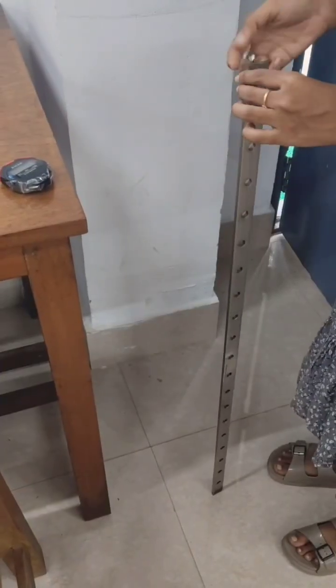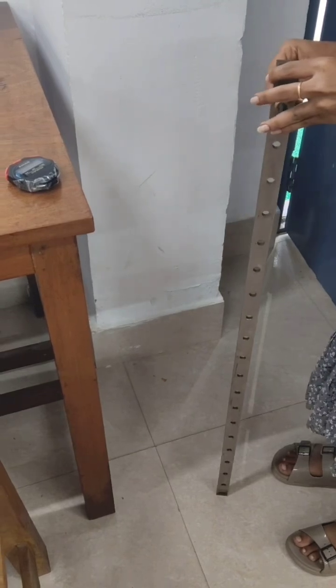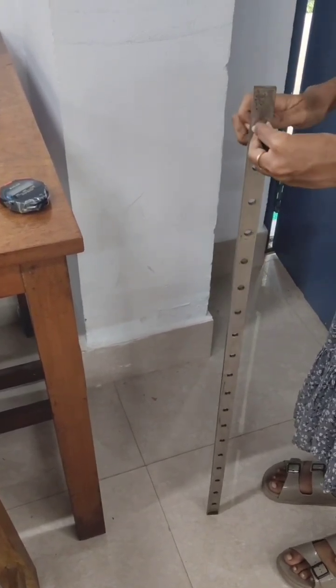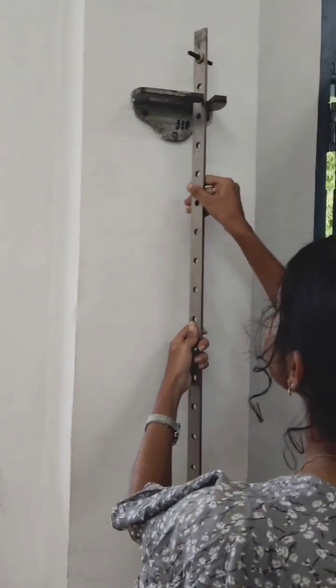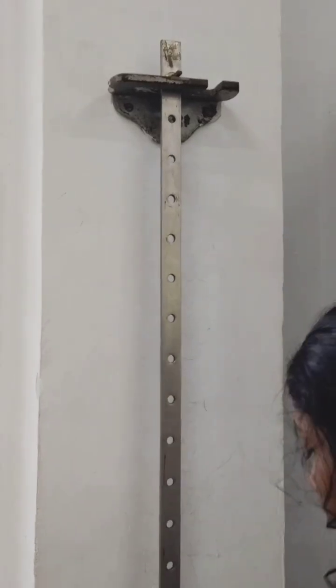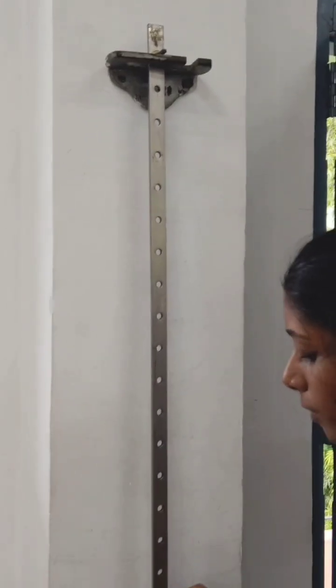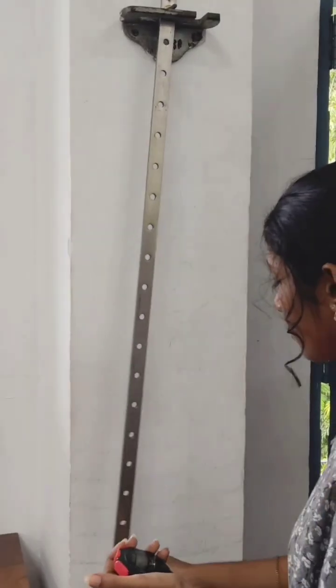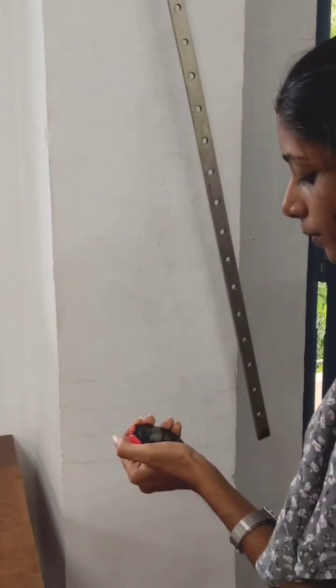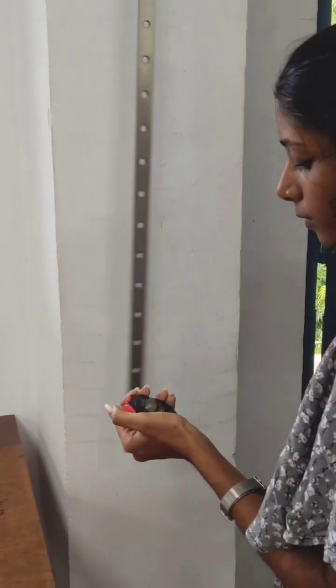So, this is our bar pendulum. It has holes in it about 5 cm apart. Tie a hole with a screw and suspend it on a knife edge with a platform and oscillate it. Calculate the time taken for 20 oscillations. Repeat this up to 9 holes, and then invert the bar pendulum and repeat the experiment.